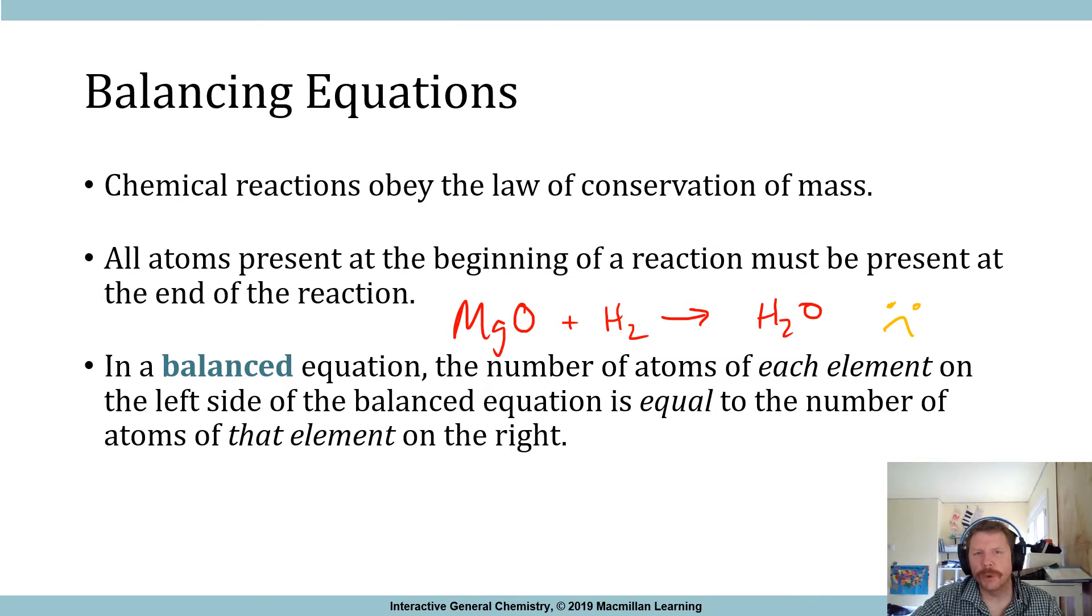In a balanced equation, the number of atoms of each element on the left side of the balanced equation is equal to the number of atoms of that element on the right side. So if you have hydrogen, if you have two hydrogen on the reactant side, you're going to have two hydrogen on the product side. If you have 15 oxygen on the reactant side, you're going to have 15 oxygen on the product side. And this is where the method that I'm going to show you comes into handy. This word equal, I want you to be able to think, okay, equation, because that's the direction that I'm going to go in.